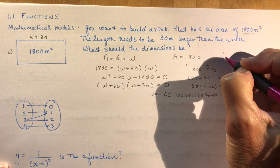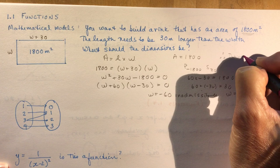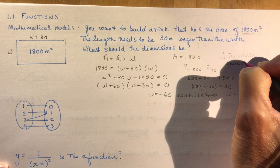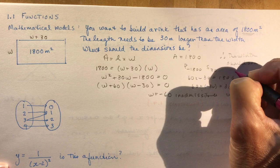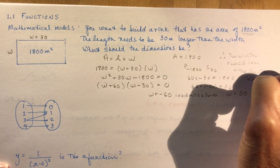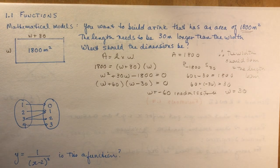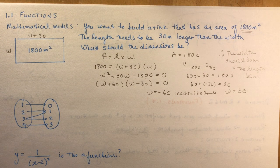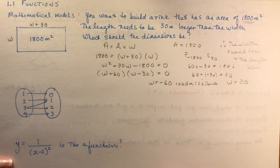Therefore the width should be 30 meters and the length, which is going to be 30 plus 30, 60 meters.